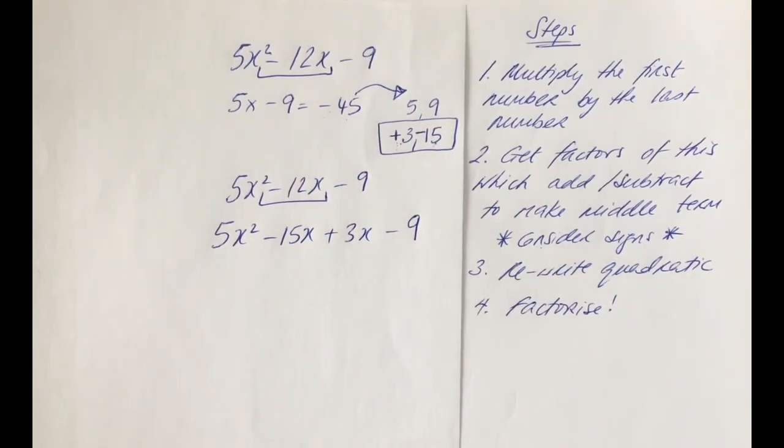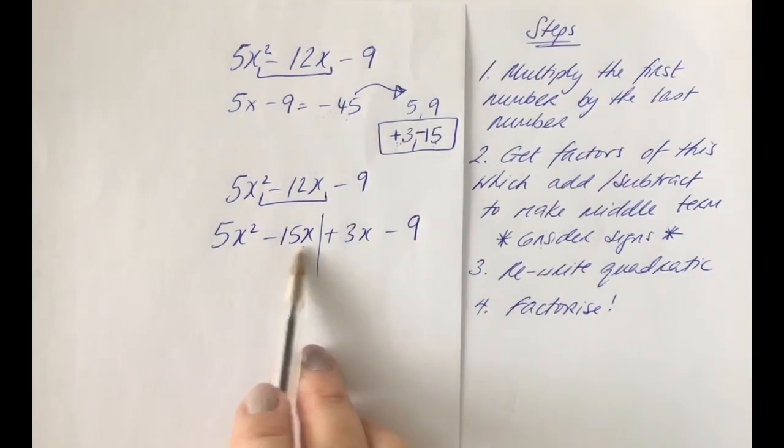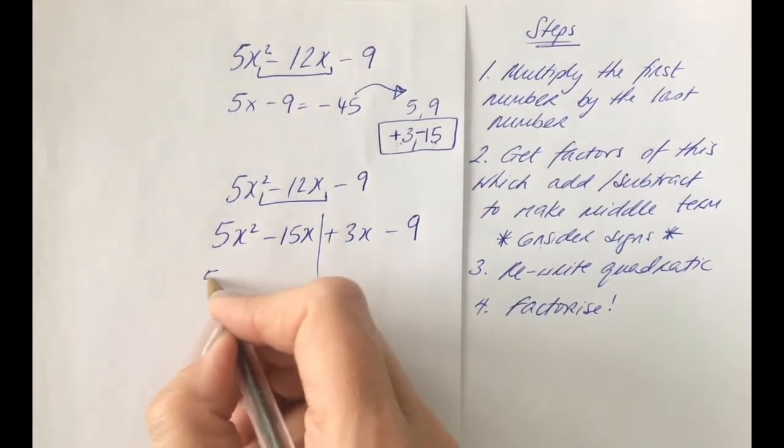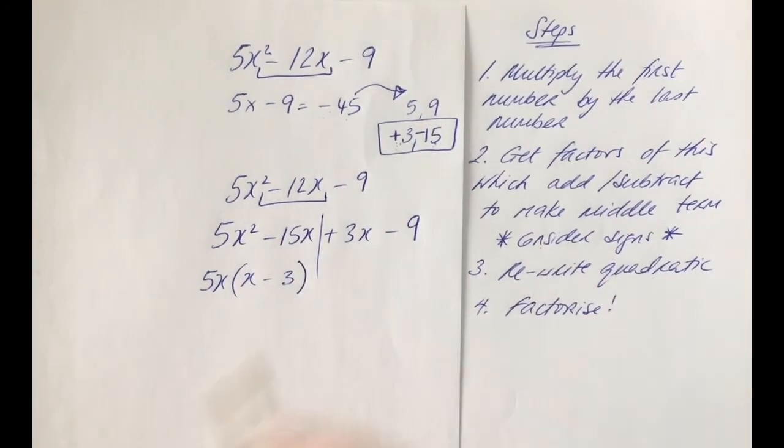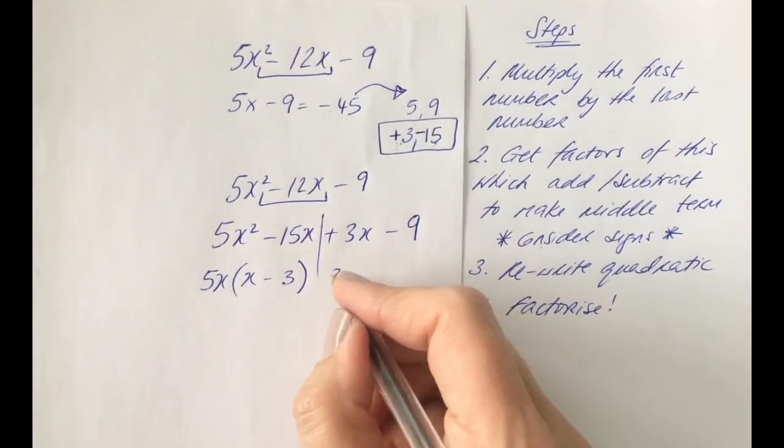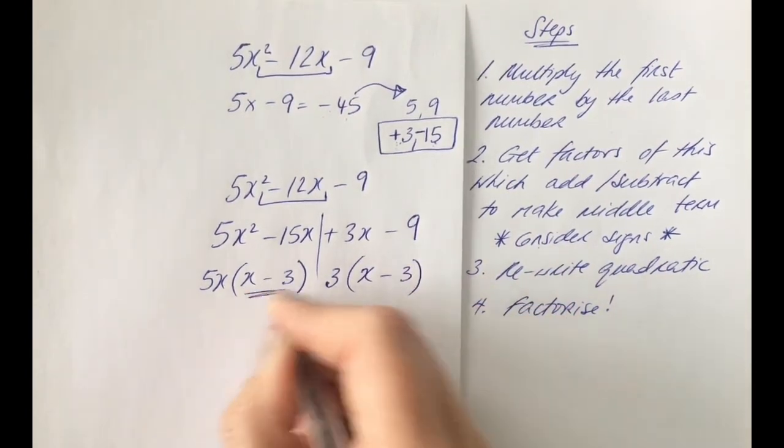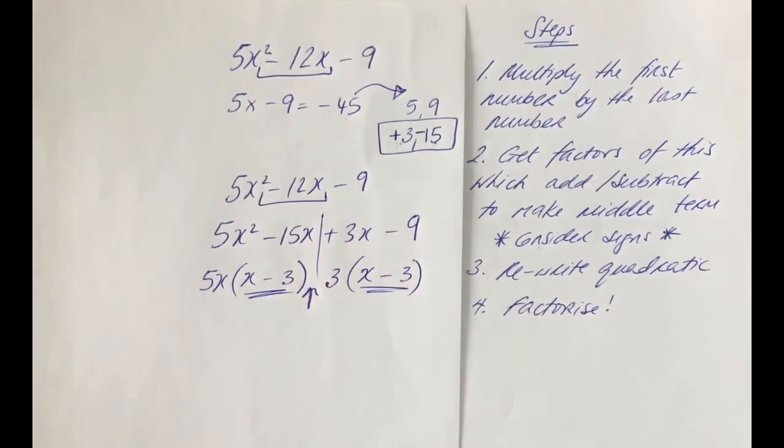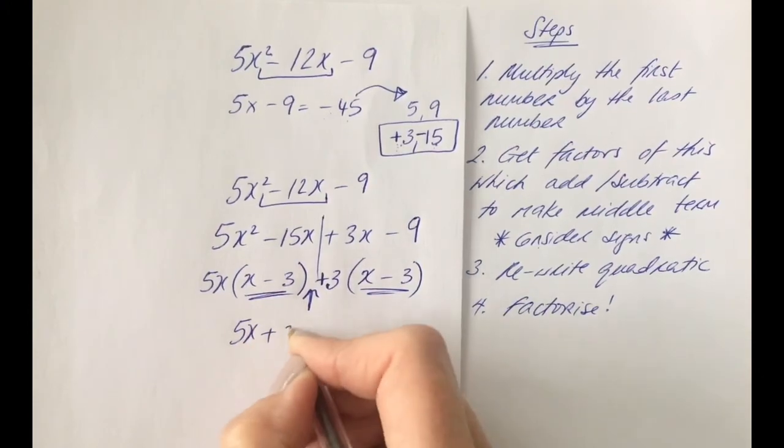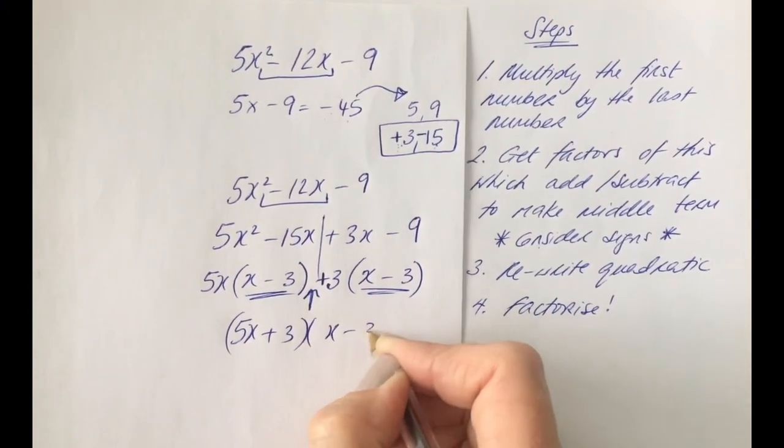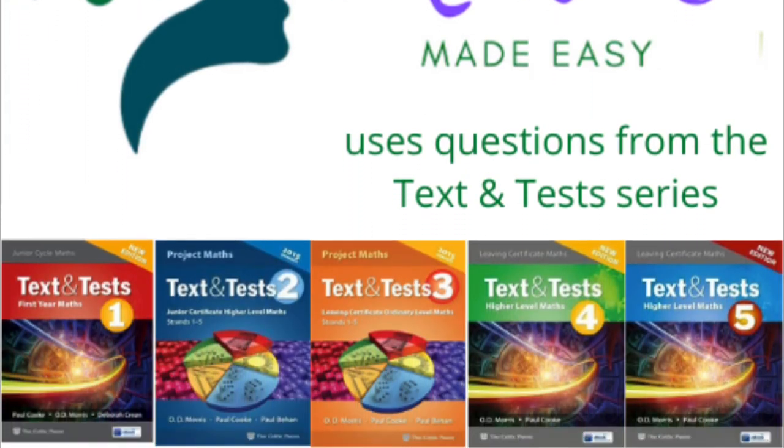Hence, I'm going to make my life a little bit easier and put the 15 first. Right, so now we have 5x squared minus 15x. And what's common to both here is 5x. And we need to multiply by an x minus 3. And common to 3x and 9 is 3. And we'd need to multiply by an x minus 3. These should be the same. So, what sign needs to go there? It is plus. So, now we have 5x plus 3 in one bracket and x minus 3 in the other.